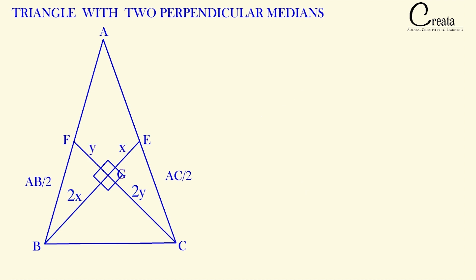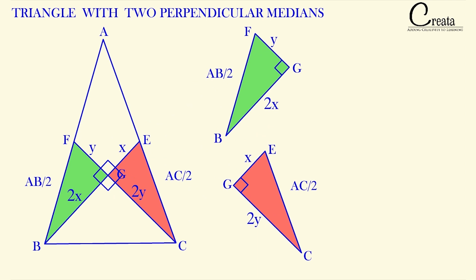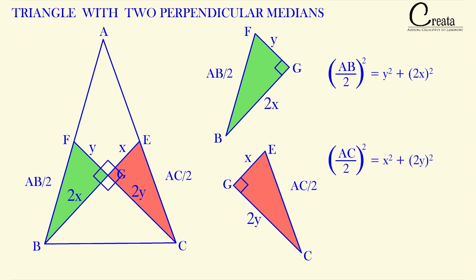Taking triangles FGB and EGC, both are right-angled triangles with angle G equal to 90 degrees. Applying Pythagoras to triangle FGB: (AB/2)² = Y² + (2X)², and applying Pythagoras to triangle EGC: (AC/2)² = X² + (2Y)².